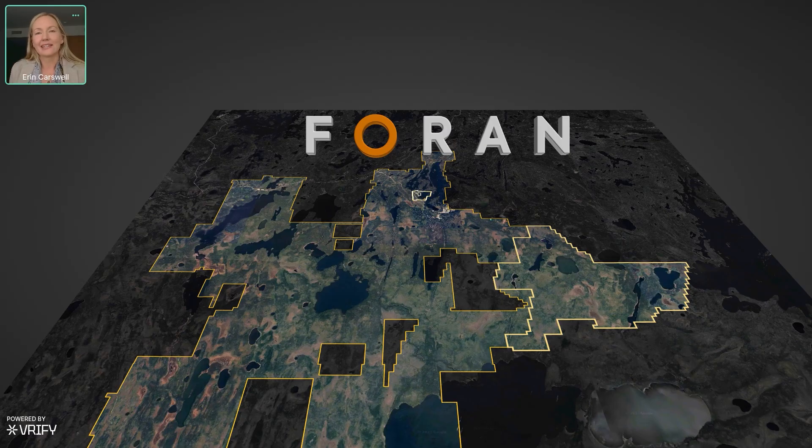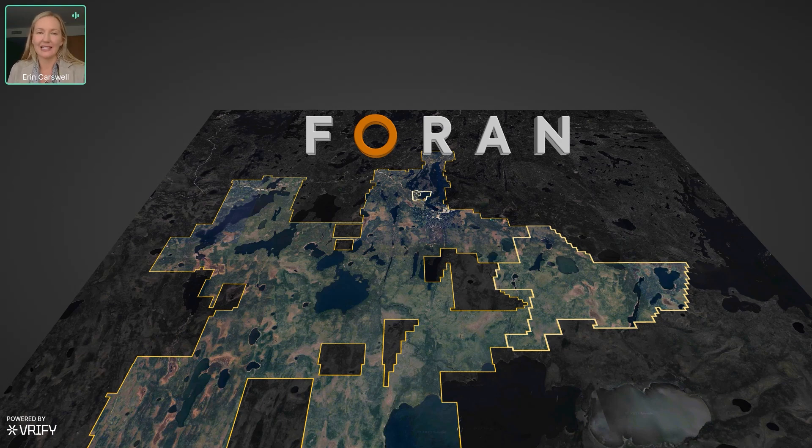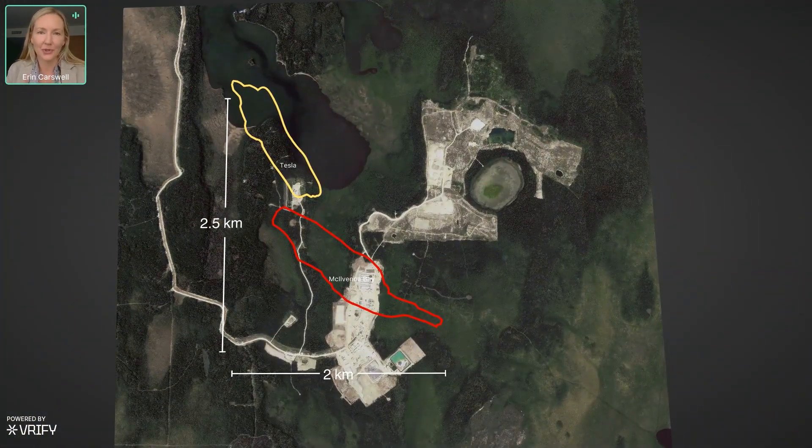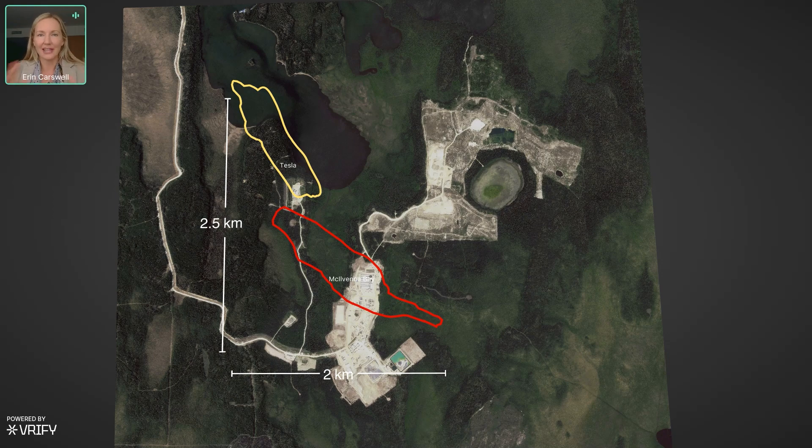Now we'll start out at the claim scale, looking at Foren's tenements here in Saskatchewan, not far from the Flin Flon area. And we'll zoom straight in though to the McElvester Bay project in the north here. Now this project, as most of you know, is under construction.